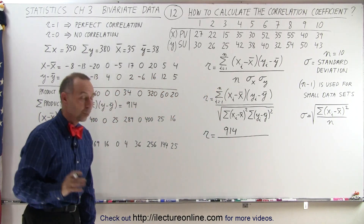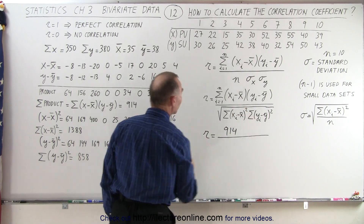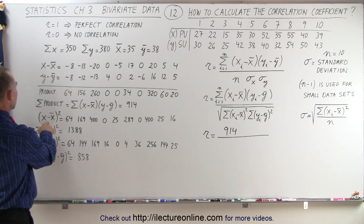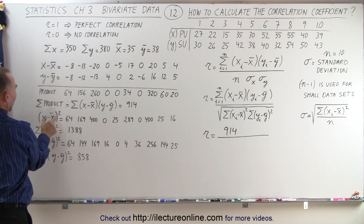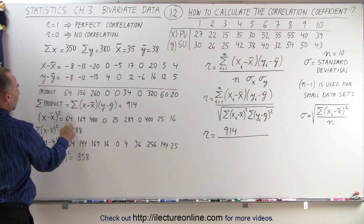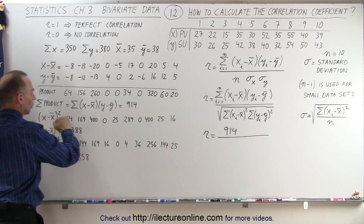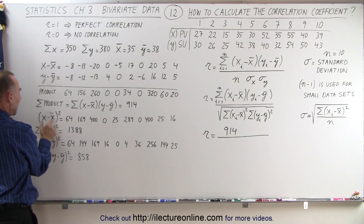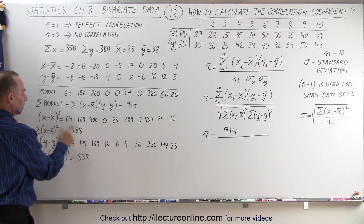For the denominator, we take the difference between each x value and the mean, square it, and then sum them all up. So −8 squared is 64, −13 squared is 169, −20 squared is 400, and so on for all values. The sum of (xi minus the average of x) squared gives us 1388.